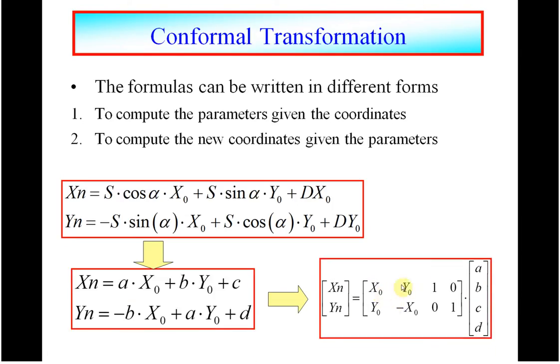Trying to slow down: x0 by a, y0 by b, plus c, that's plus the translation c, and no translation for the y. Here, y0 by a, minus x0 by b, no translation for the x, and one translation for the d.